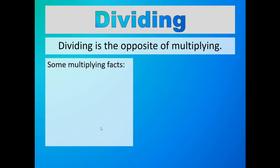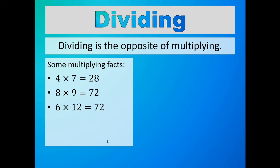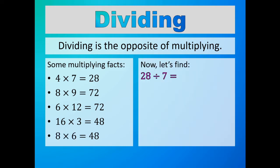Here are some multiplying facts: 4 times 7 is equal to 28. 8 times 9 is equal to 72. 6 times 12 is equal to 72. 16 times 3 is equal to 48. 8 times 6 is equal to 48. Now let's find 28 divided by 7.